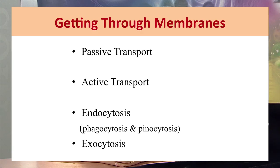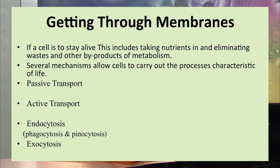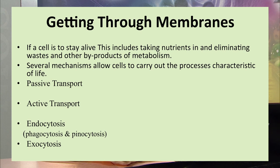We have now covered what cells are, what organelles are present, and how cells are differentiated. The next question is: how many molecules can come into and go out of the cell? There are several mechanisms through which molecules can move in and out of the cell, including passive transport, active transport, endocytosis, and exocytosis. These mechanisms are required because cells must stay alive, take in nutrition, and eliminate waste products and other byproducts of metabolism.